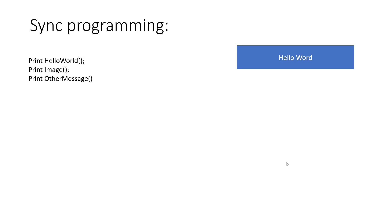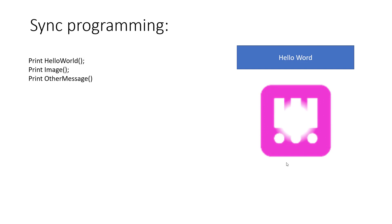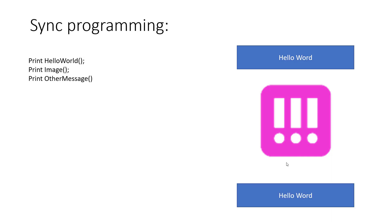First of all I want to discuss synchronous programming and where we use it. Suppose you want to print hello world, print an image, and print other messages. In synchronous programming, the order of printing tasks is top to bottom. If you upload a 1 MB image and a 2 MB image, the text is rendered quickly compared to the image. The image may take 5 to 6 seconds to upload, so other messages display only after the image loads.